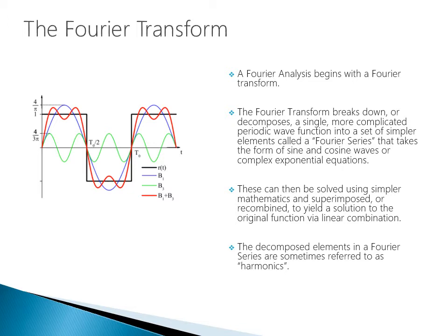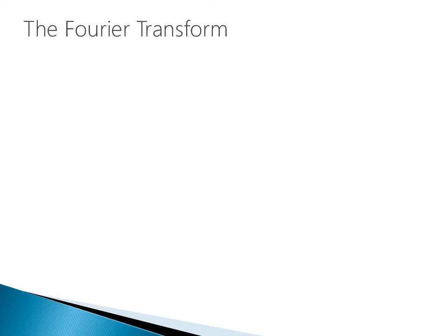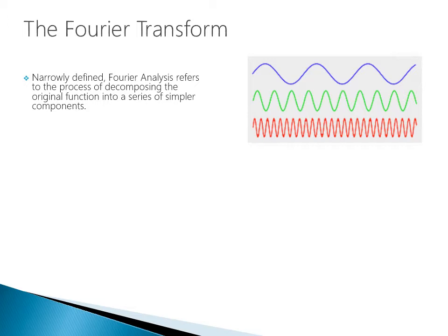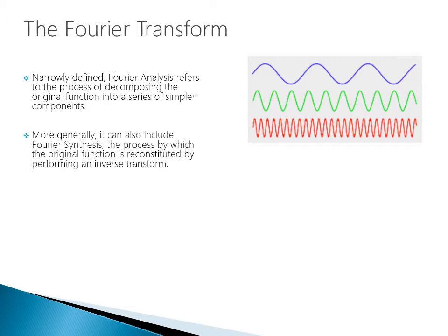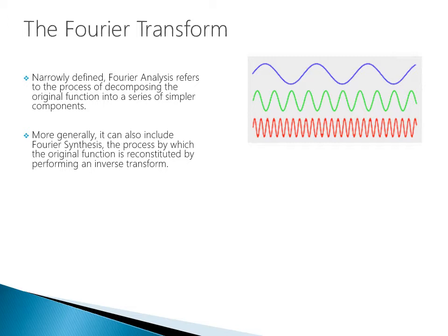Narrowly defined, Fourier Analysis refers to the process of decomposing the original function into a series of simpler components. More generally, it also includes Fourier synthesis — the process by which the original function is reconstituted by performing an inverse transform. Fourier synthesis essentially runs the Fourier Analysis in reverse: we take these smaller wave components and recombine them to recreate the original wave.